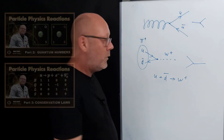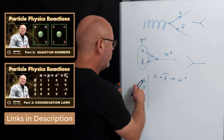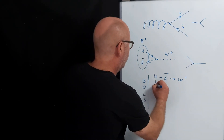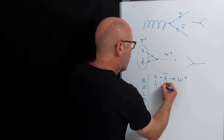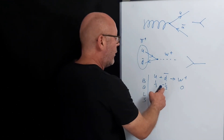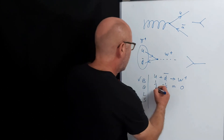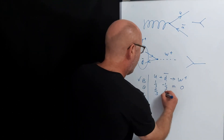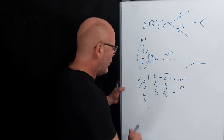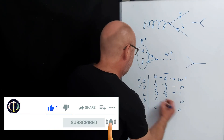Let's check: up plus anti-down gives W+. I'll list the quantum numbers: B (baryon number), Q (charge), L (lepton number), and S (strangeness). Up is a quark, so B = 1/3. Anti-down is an anti-quark, so B = −1/3. W+ is not a quark, so B = 0. One third minus one third is zero — baryon number is conserved. Charge of up is 2/3, charge of anti-down is 1/3, total is 1, and W+ has charge 1 — check. There are no leptons, so lepton number is zero everywhere. No strange quarks, so strangeness is zero everywhere. Check, check.